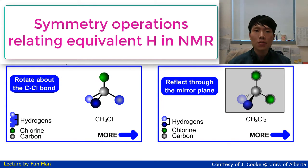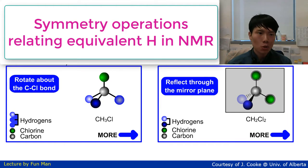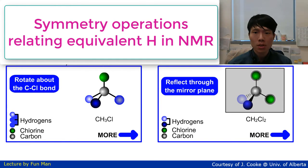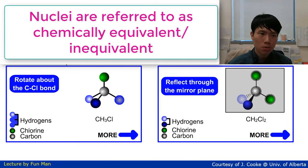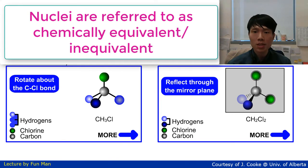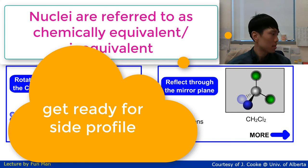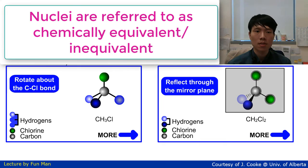One important consequence of chemical shift is that each chemically different type of active nucleus in a molecule will give rise to its own signal in an NMR spectrum. The nuclei are thus referred to as chemically equivalent or chemically inequivalent when determining how many signals will be observed in an NMR spectrum.